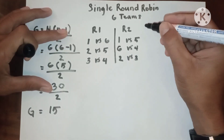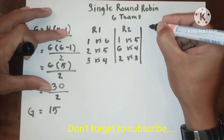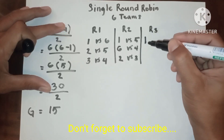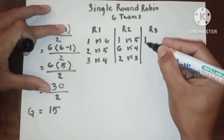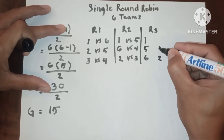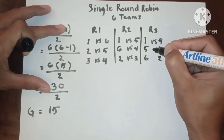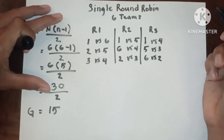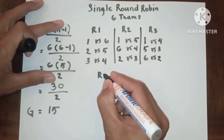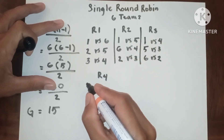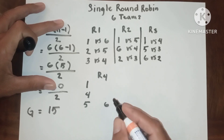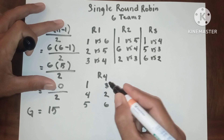Now let's proceed to round three. Team one should be permanently placed here, and then five, six, two, three, and four. Now round four: one, four, five, six, two, and three.